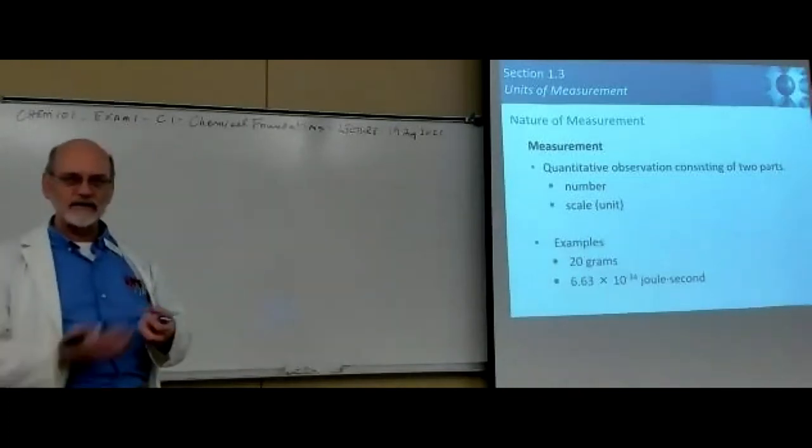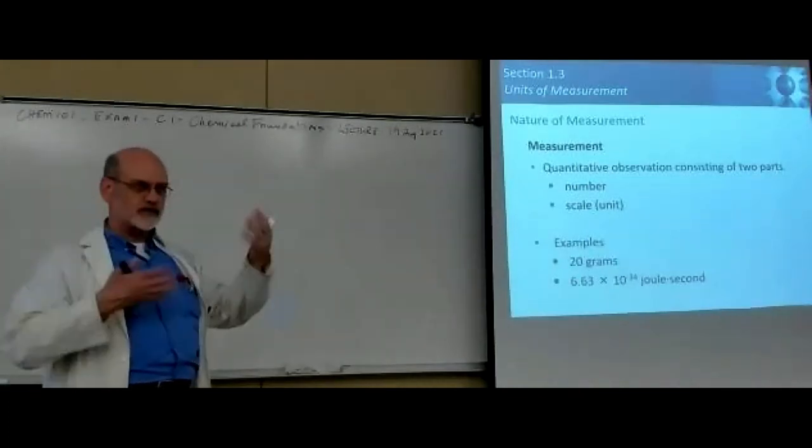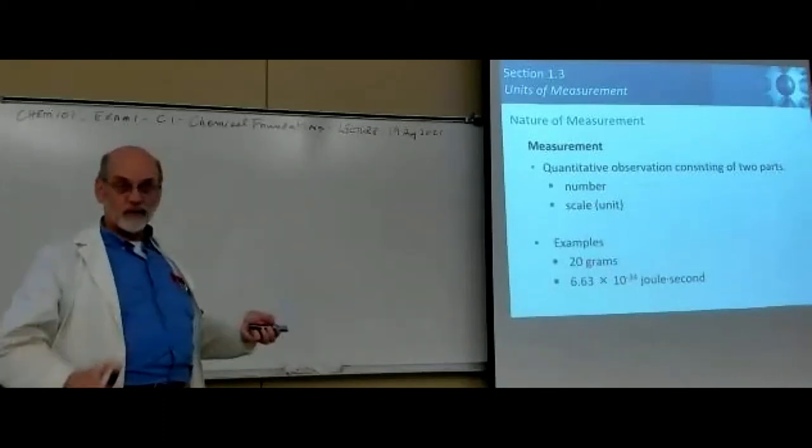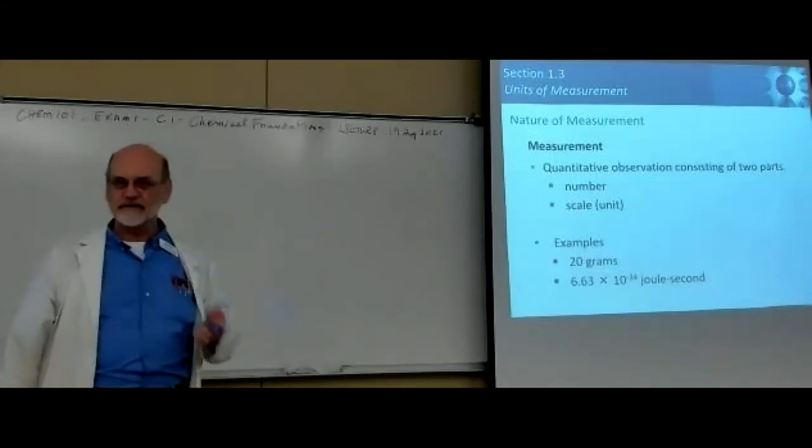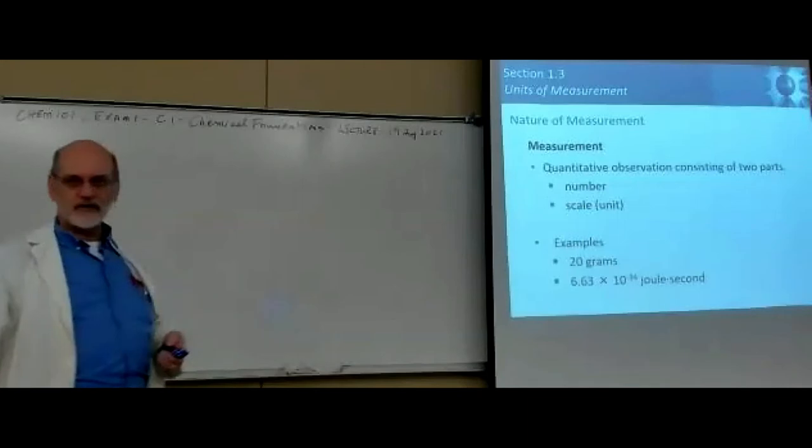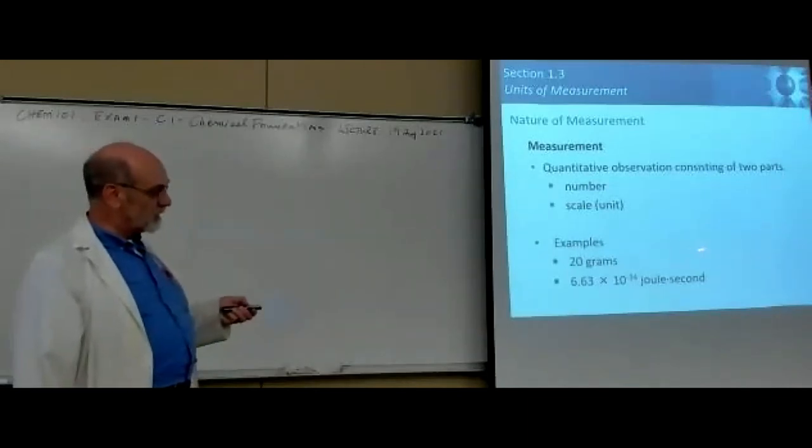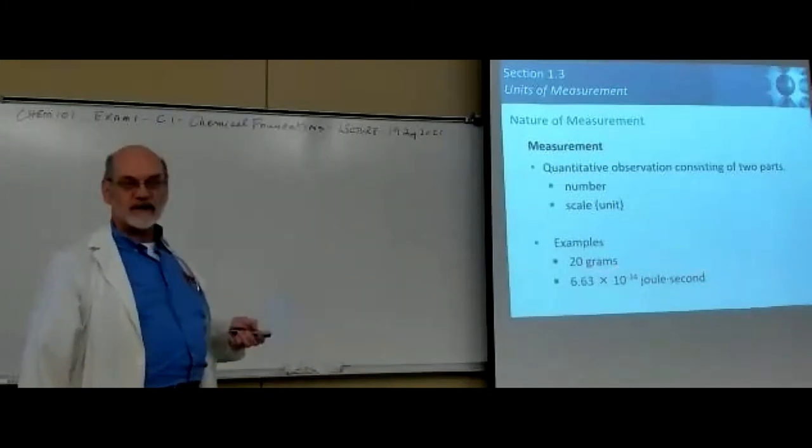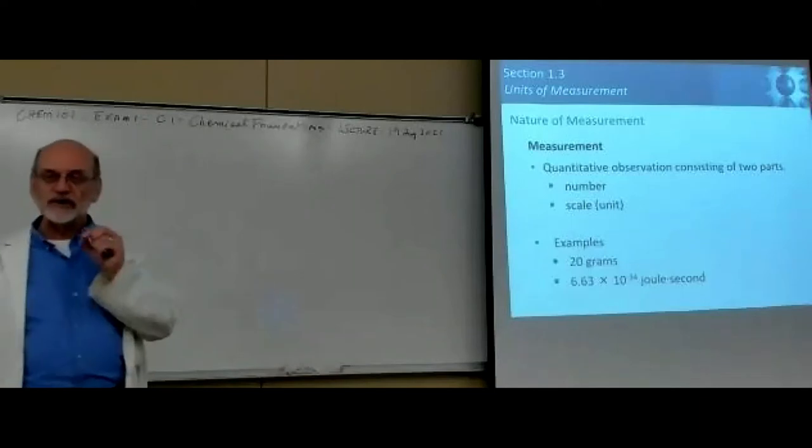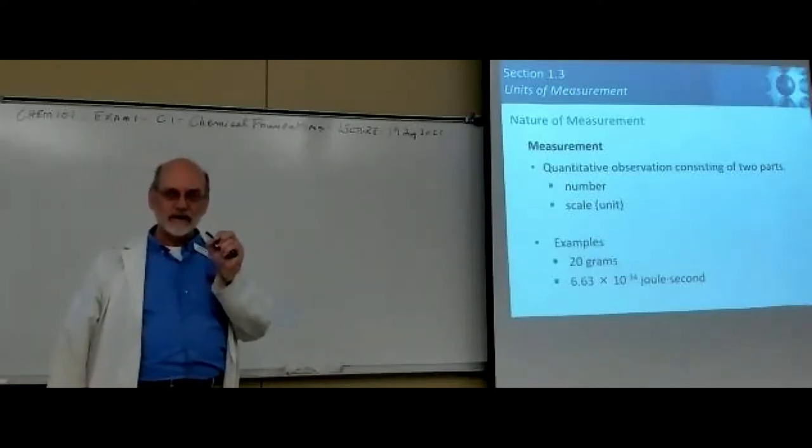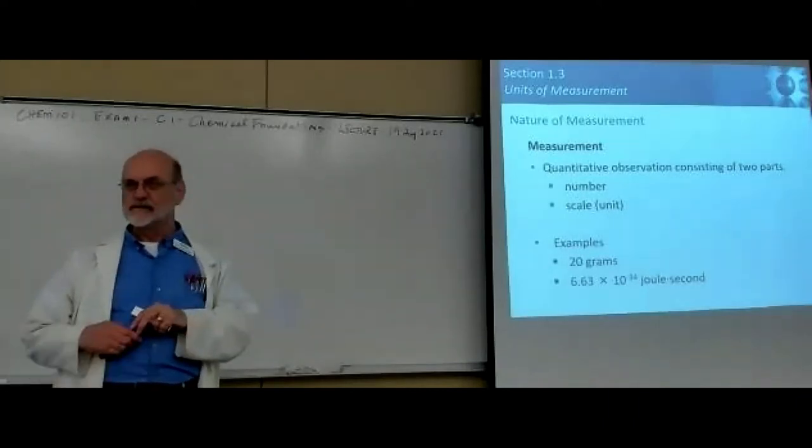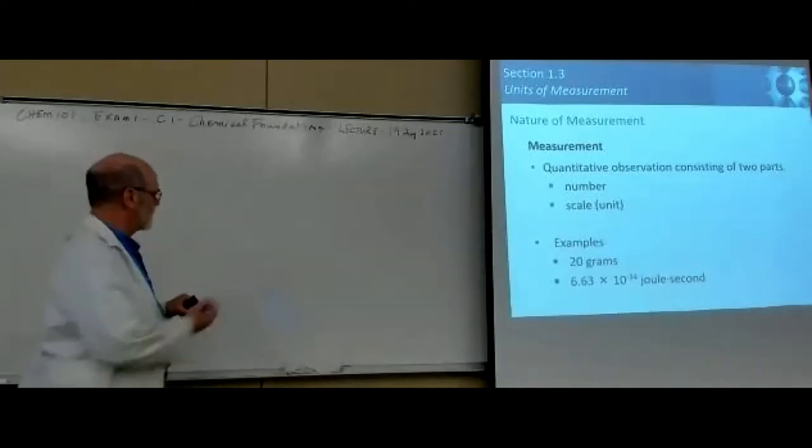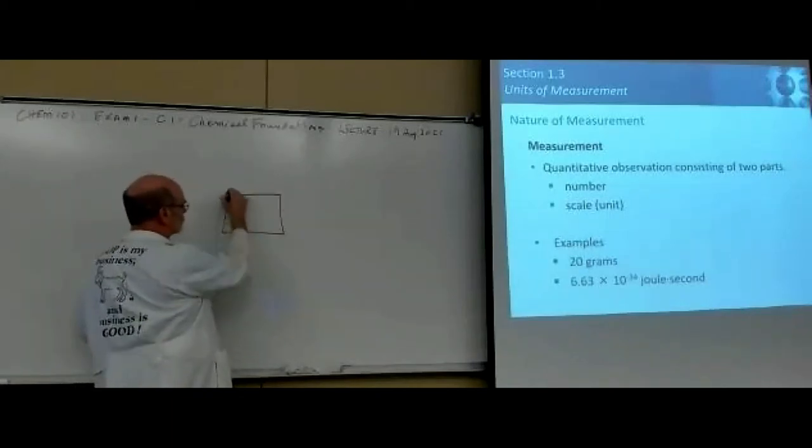Units of measure don't necessarily have to be single units, they can be combinations. When you multiply numbers together and there are units there, then the units get multiplied too. For instance, if you have a box and you want to say something about the volume, you multiply 2 inches times 4 inches times 3 inches. If you multiply those together, you get the volume: 24 cubic inches.